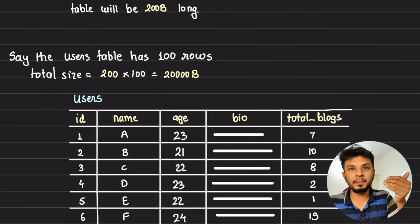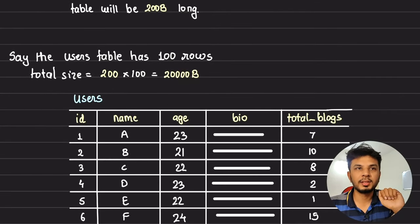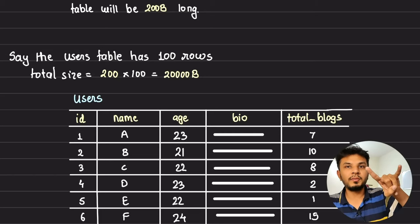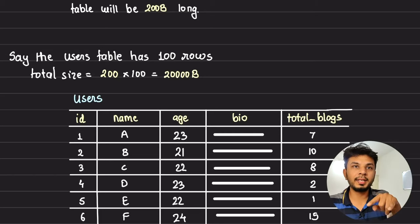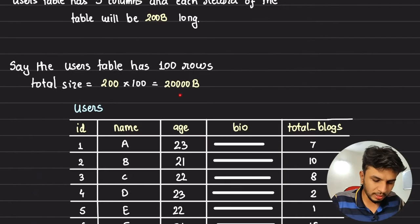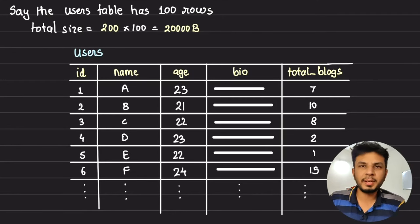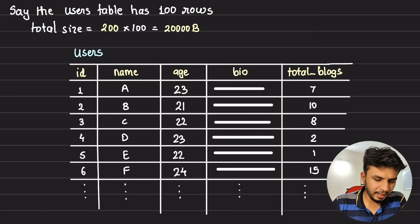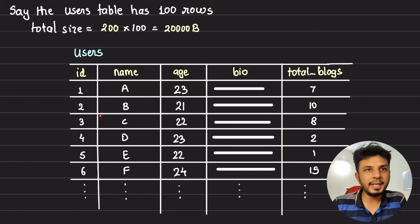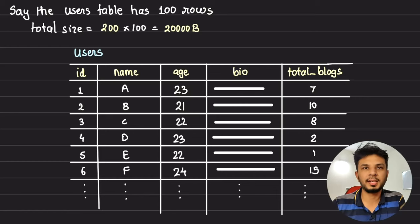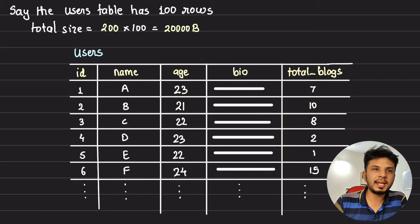Our users table has 100 rows. What would be the total size of this table? 200 bytes for each row, 100 rows, so 20,000 bytes. It would look something like this — dummy entries where ID 1, name A, age 23, some bio, total blocks 7; ID 2, name B, age 21, bio something, total blocks 10, and so on. Let's play with these 6 entries, with many more totaling 100 rows.